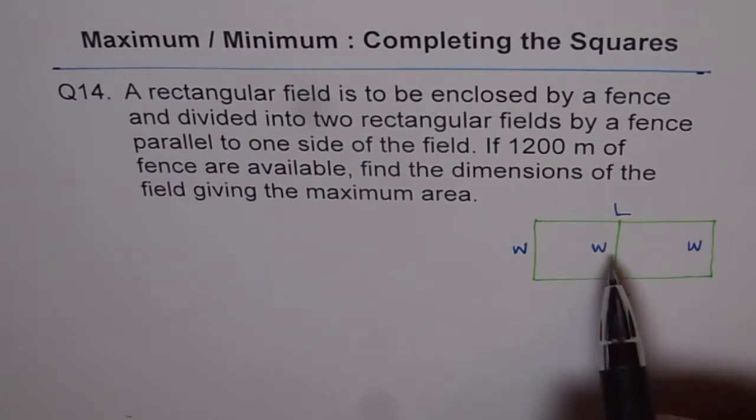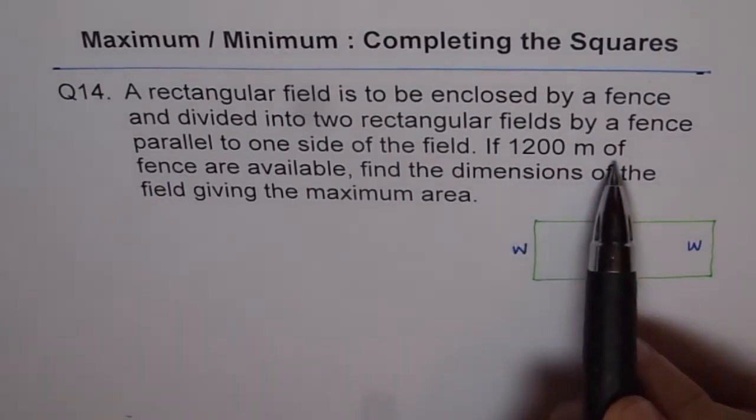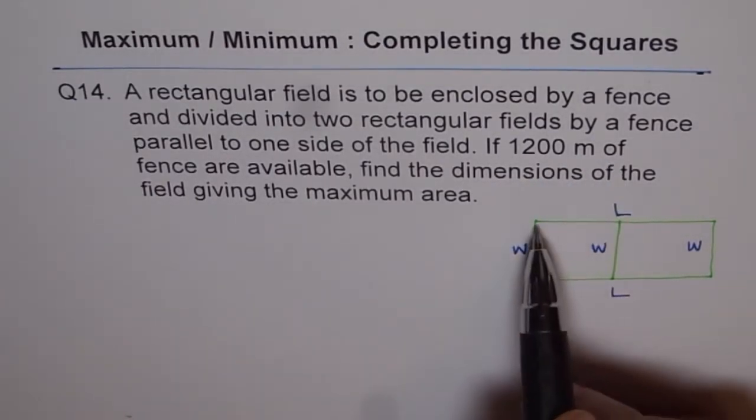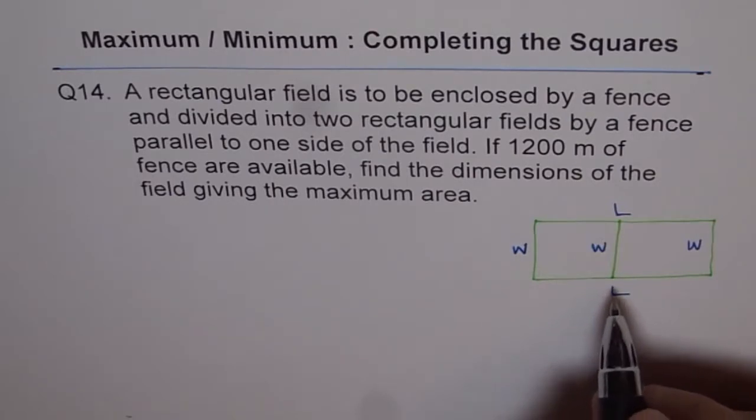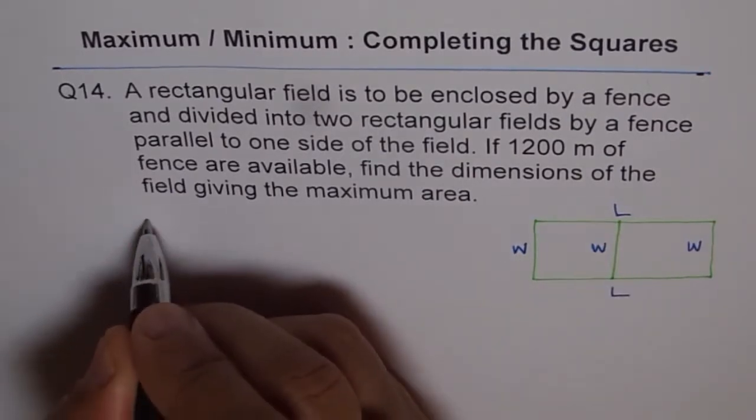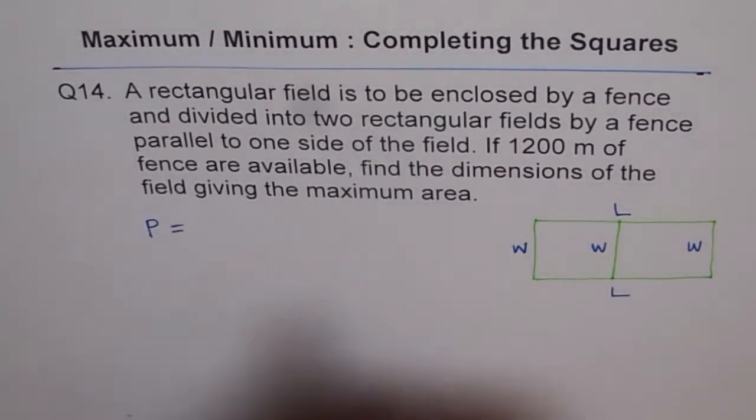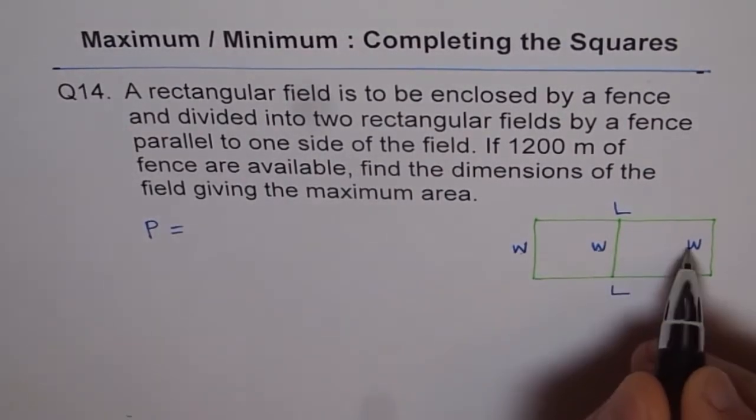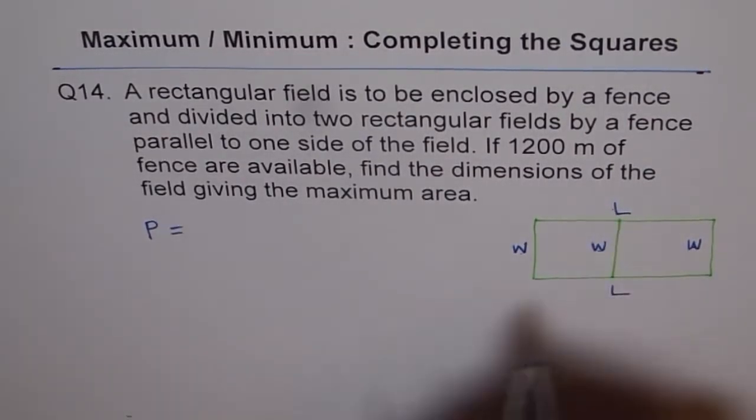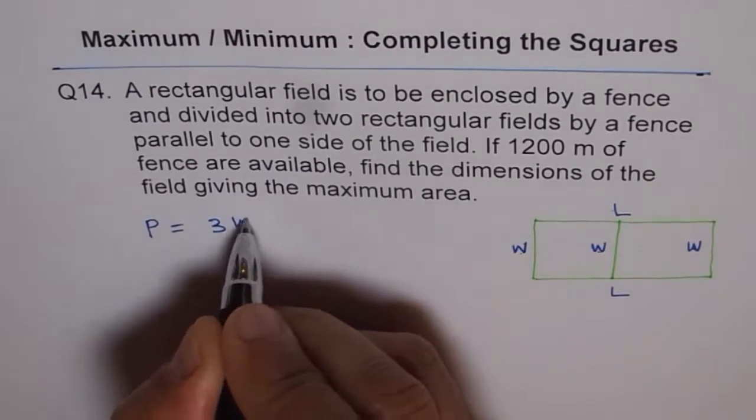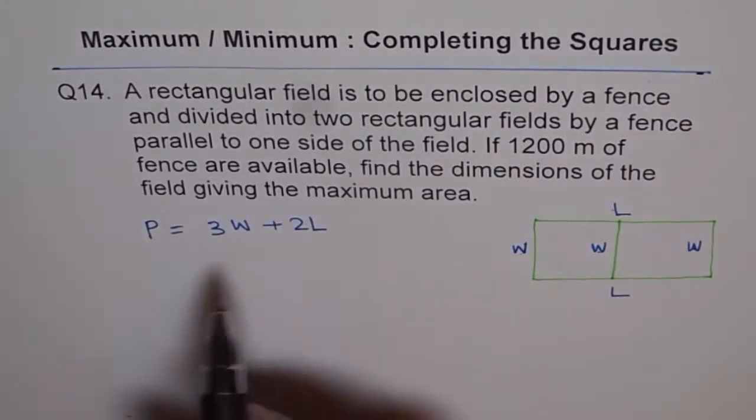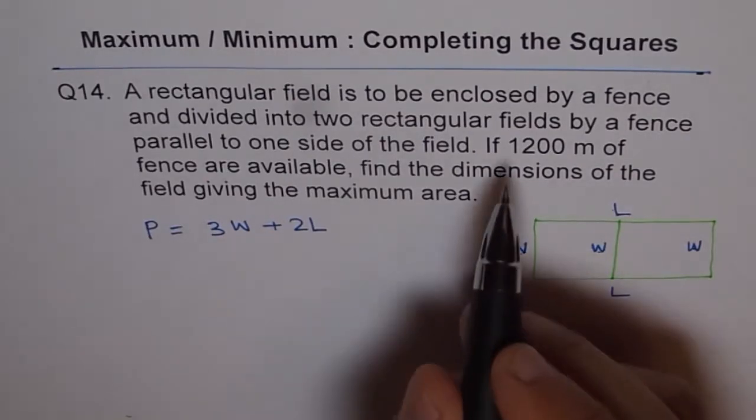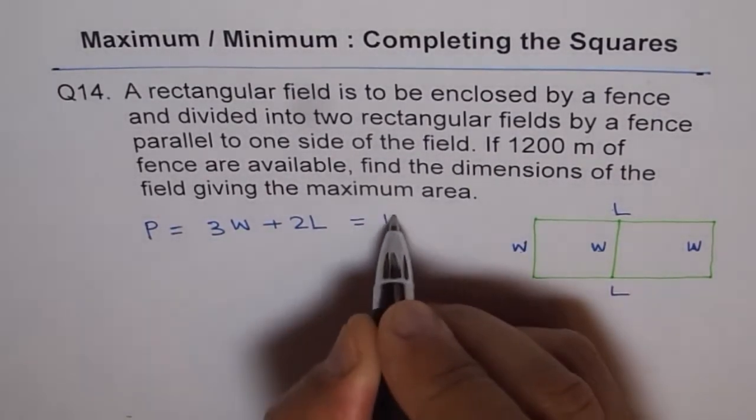Now, we are given the perimeter. When we say if 1200 meters of fence are available, that means this length in all is 1200 meters, and we know the perimeter. So we say let P, the perimeter, be what? Perimeter P equals 3W plus 2L, correct? So it is 3W plus 2L. Now, perimeter is already given to us, and the value is 1200. So we'll write this as 1200.